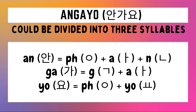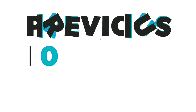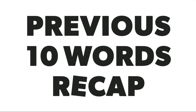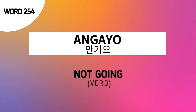Again, Angkayo means 'to not go' or 'not going.' And with that, you've just learned Angkayo. Now let's proceed to the previous 10 words recap. As of now, the previous 10 words are words number 244 to 253. But don't forget our word for today — word number 254, Angkayo, which means 'to not go' or 'not going.'